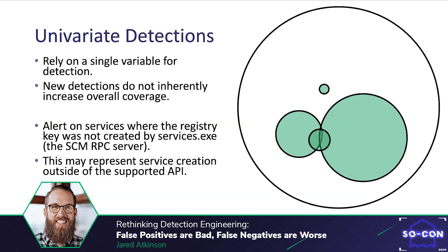Univariate detections are individual detections that consider only a single variable as part of their logic. Until now each detection we've discussed is univariate — we've alerted on the service name, the service type, and whether the service was created remotely, but for each individual detection we've only used one variable. The problem is that this is overly reductionist in nature and each new detection does not inherently increase coverage because there may be overlap. An example would be to alert on services where the service registry key was created by a process other than services.exe.